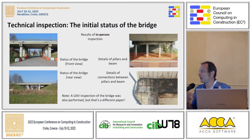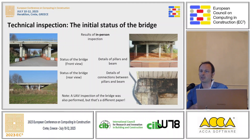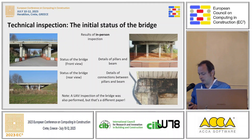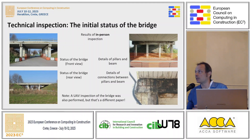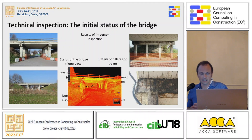After identifying the bridge, my colleagues in the civil engineering area performed an in-person inspection to identify the damage. You can see the status of the bridge in some of these pictures — the most damaged parts were the pillars and the beams. We also attempted to perform an automated inspection using drones and laser scanners, but due to lack of time we did not use that data for planning the recovery intervention.